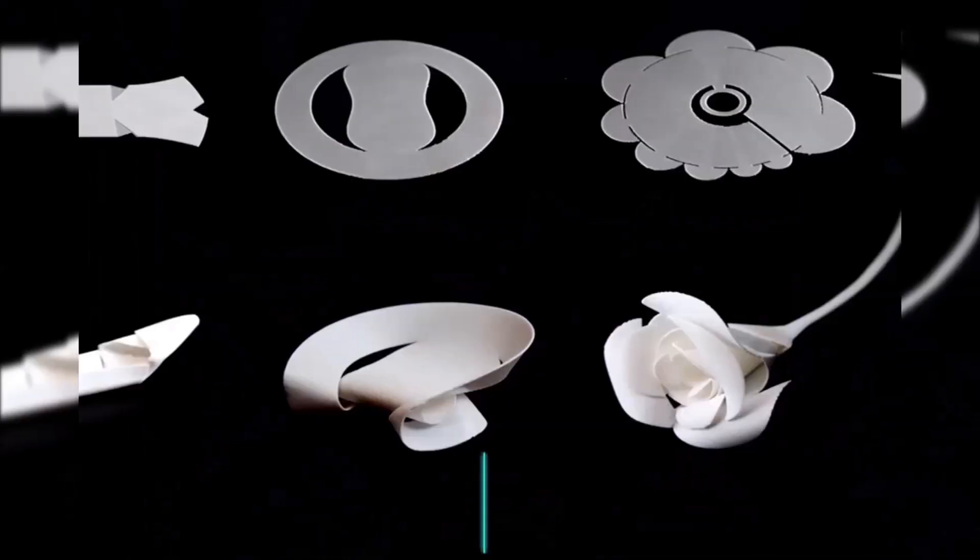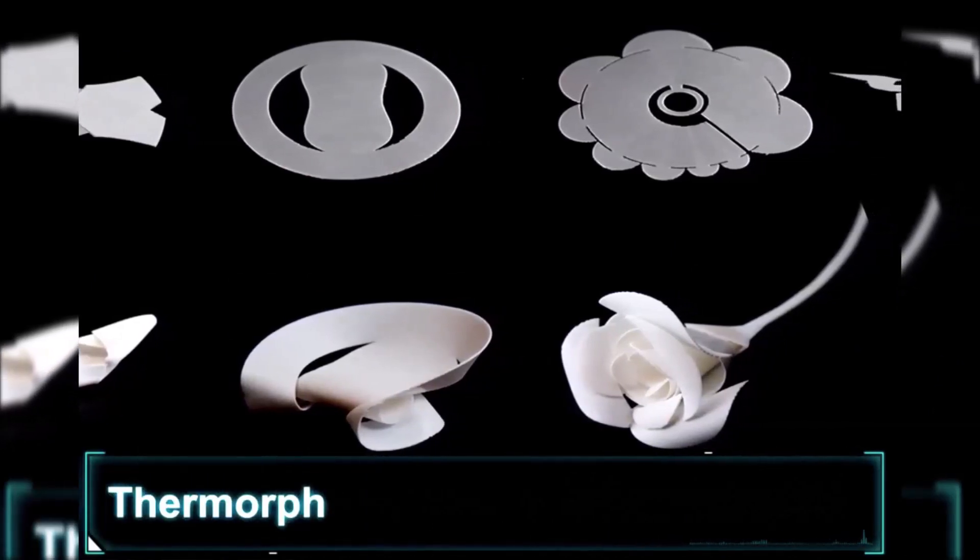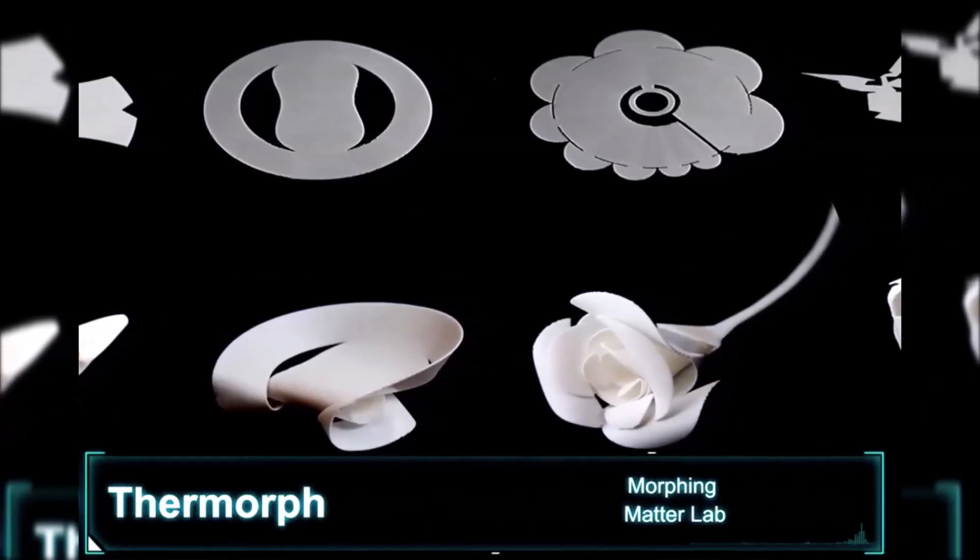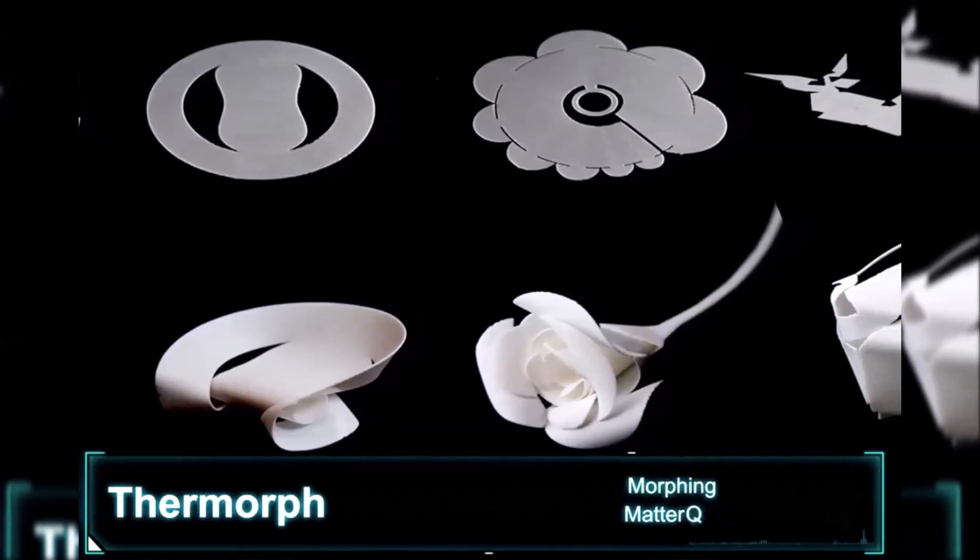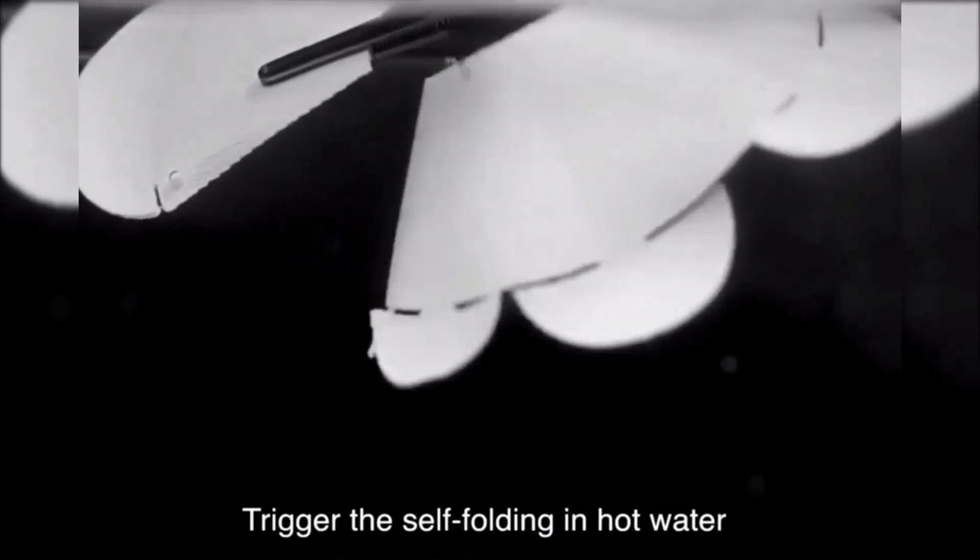Thermorph comes from a morphing matter lab. It requires a special type of 3D printer and a design editor. Like many folding objects, this one also folds when exposed to water.